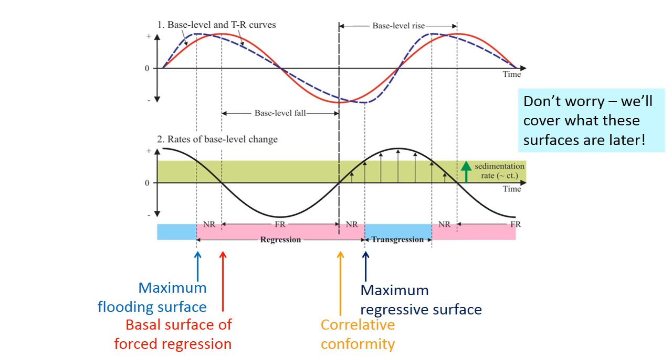Three surfaces are erosional, the subaerial unconformity, and the regressive surface of marine erosion, which I've abbreviated here as RSME, just because I don't have any space to write the whole name. They form during base level fall, during forced regression. And then there's the transgressive ravinement surface, which forms during transgression, a rapid base level rise. Some of these surfaces are better developed in some environments than in others, and they have somewhat different characteristics depending on the setting, so we're going to cover them all in more detail later on.